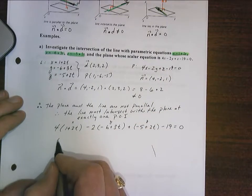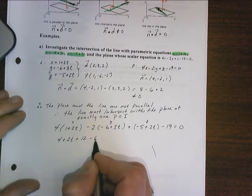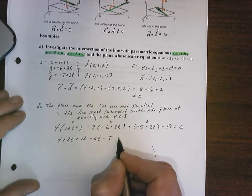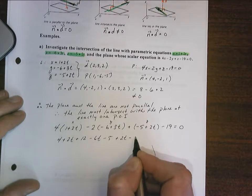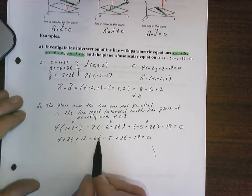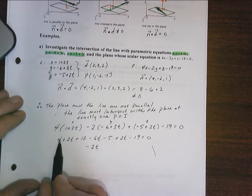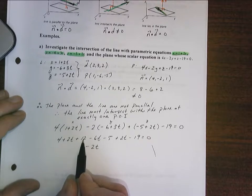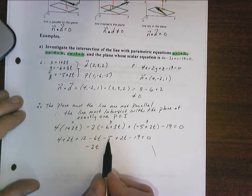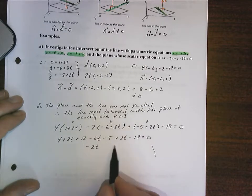So solving for this is going to be 4 times 1 plus 2t plus 12 times negative 6t minus 5 plus 2t minus 19 equals 0. So let's see, let's do the t's first. So it's 2t subtract 6t is negative 4t, negative 2t. And then I've got 4 plus 12 is 16, take away 5 is 11, 11 take away 19 is negative 8.